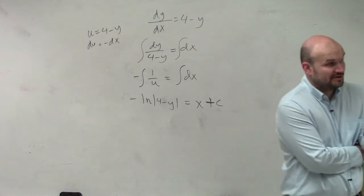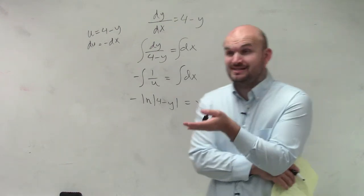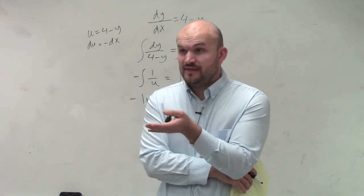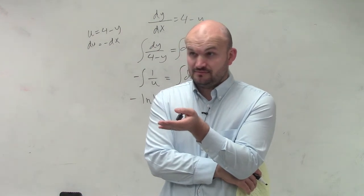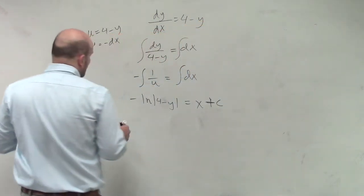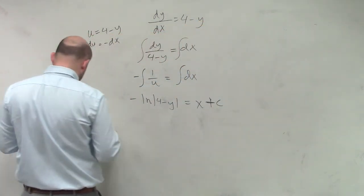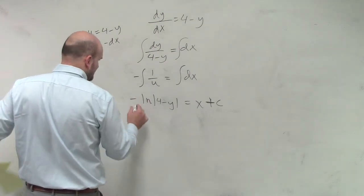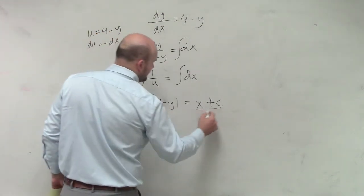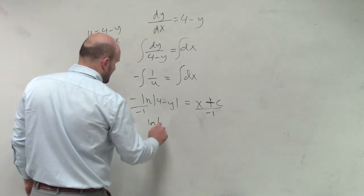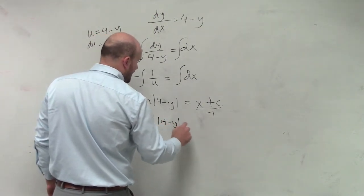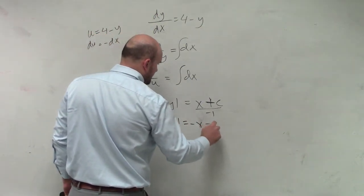So we need to get rid of this logarithm. Would you guys agree if we want to solve for y, it's inside of a logarithm? That would cause a problem, right? So what we're going to do is we're going to want to raise... Let's just get rid of the negative first. So I have ln of absolute value of 4-y equals negative x minus c.